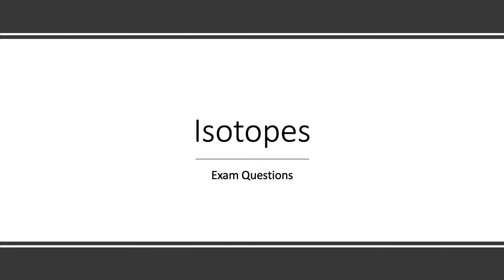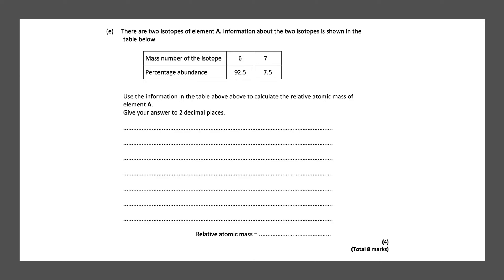Hi there and welcome to our next video on isotopes. This is a continuation from our last video. In this video we're going to be looking at exam questions, so let's get started. Our first exam question states: there are two isotopes of element A. Information about the two isotopes is shown in the table below. Use the information in the table above to calculate the relative atomic mass of element A. Give your answer to two decimal places.